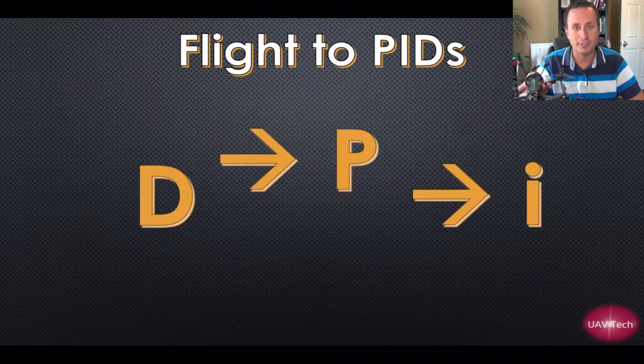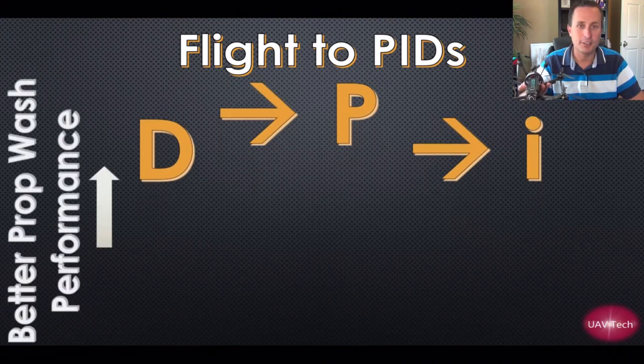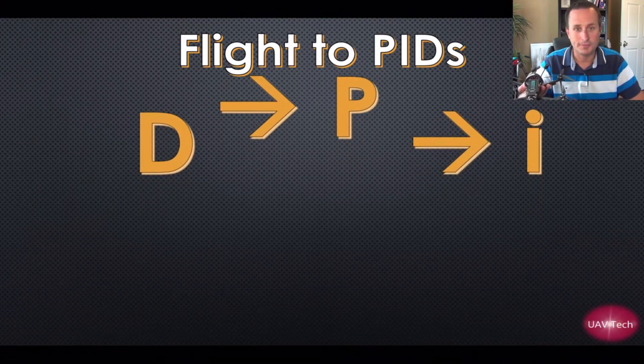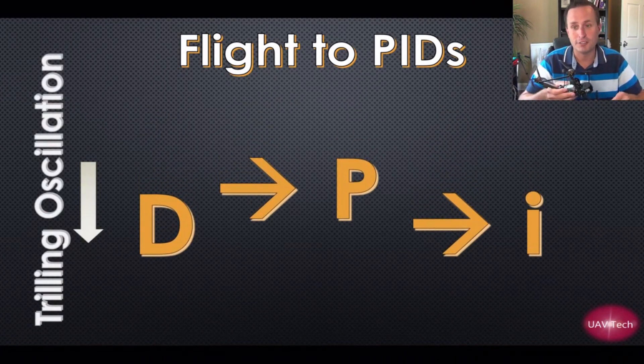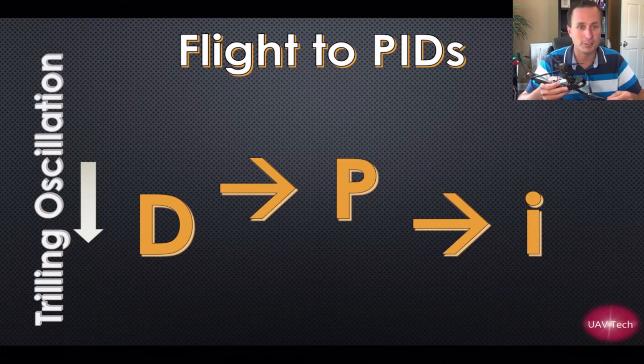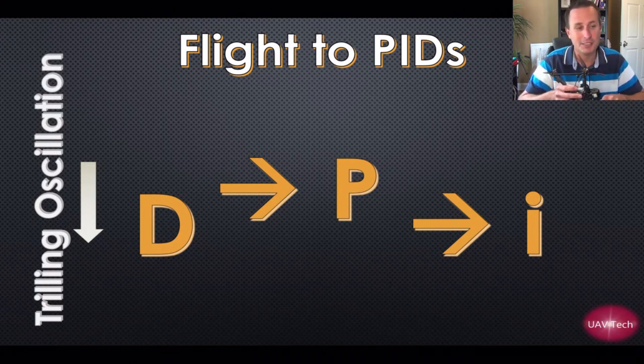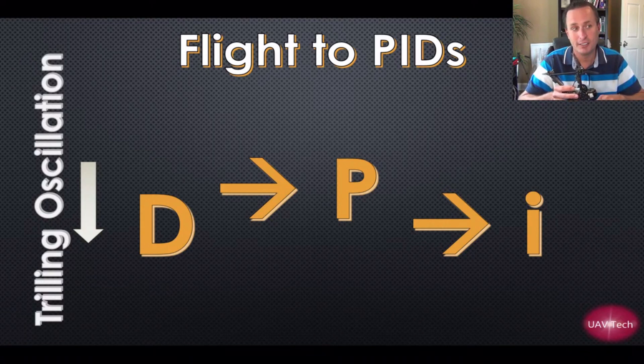So that fundamental of you raise it all or reduce it all - prop wash performance is a huge part of flight performance in general, right? We're always looking for better prop wash performance. So you really want to move them all up or move them all down. People will say raise your D term, but what they really mean is raise your D term and then take the rest for the ride. And you can see hopefully here why the sliders make all this much easier.